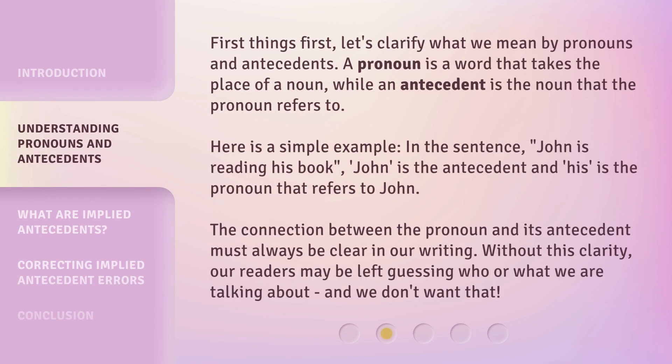First things first, let's clarify what we mean by pronouns and antecedents. A pronoun is a word that takes the place of a noun, while an antecedent is the noun that the pronoun refers to. Here is a simple example. In the sentence, 'John is reading his book,' John is the antecedent and 'his' is the pronoun that refers to John. The connection between the pronoun and its antecedent must always be clear in our writing.